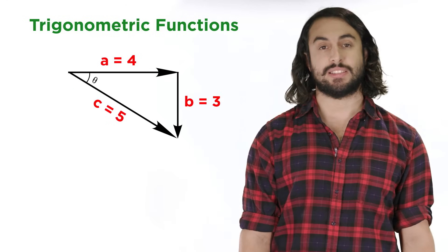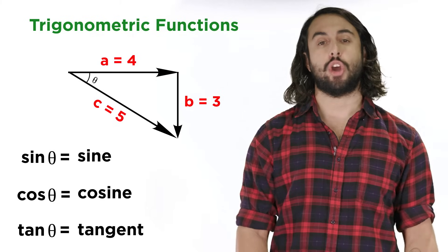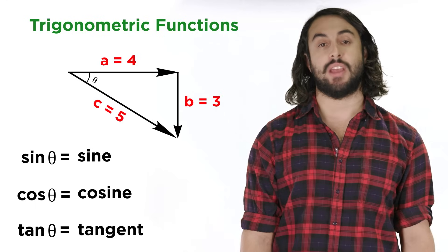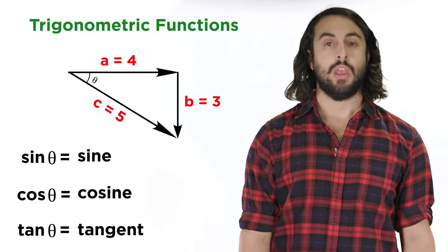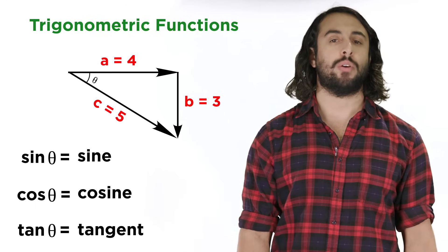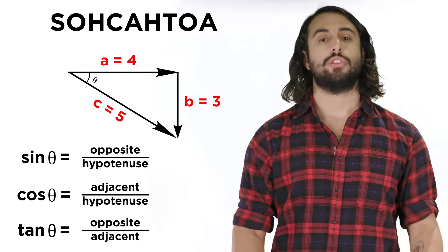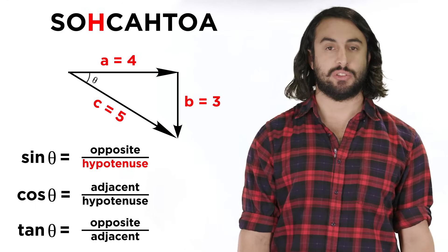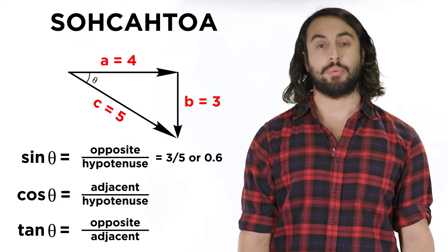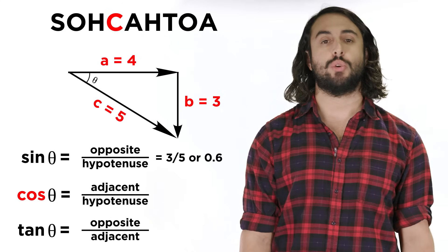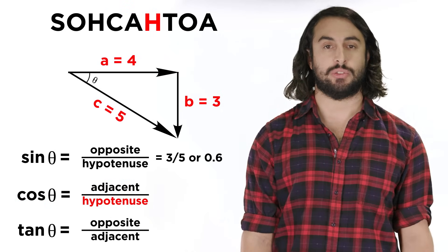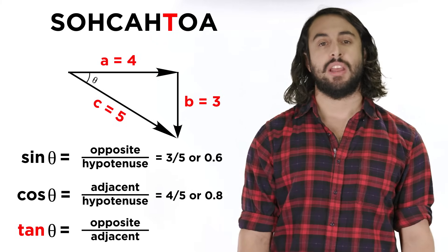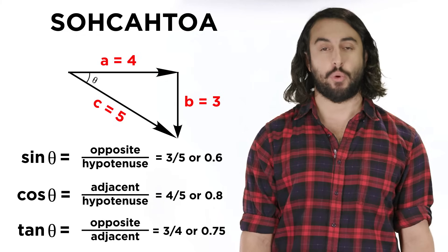We can use the lengths of these sides to find the sine, cosine, and tangent of this angle. We will cover these functions in more depth in the upcoming mathematics course, but for now all we need to remember is the mnemonic device SOHCAHTOA. Sine theta is equal to opposite over hypotenuse, in this case that would be three-fifths. Cosine theta is equal to adjacent over hypotenuse, which here will be four-fifths. And tangent theta is opposite over adjacent, or three-fourths.